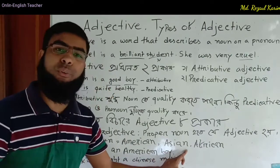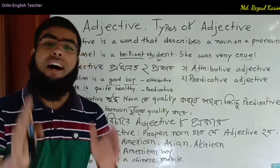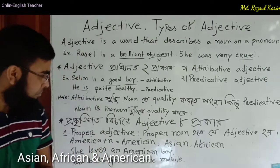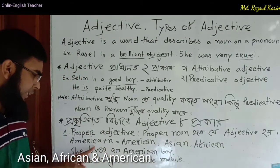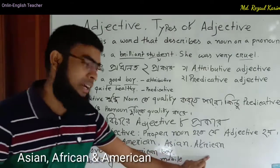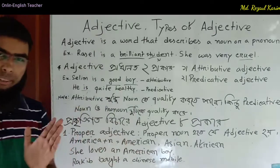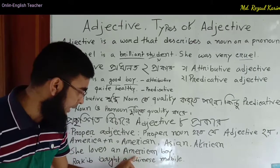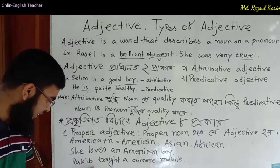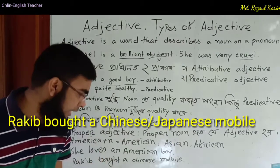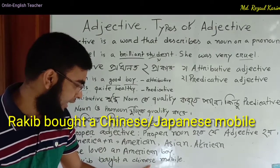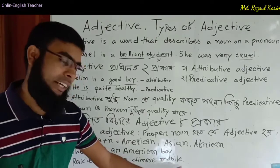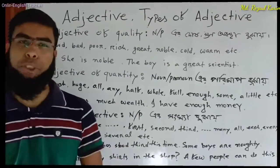Next is the proper adjective. For example, 'Asian' — it has become a predicative and a proper adjective. 'African' — duty example. She loves an American boy — 'American' is a proper adjective. Also: a Chinese mobile, a Japanese product — 'Chinese' and 'Japanese' are proper adjectives derived from proper nouns.